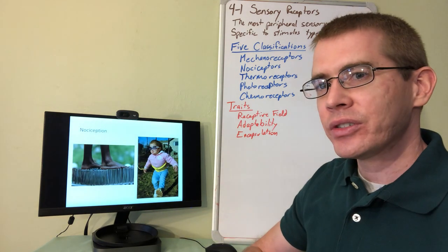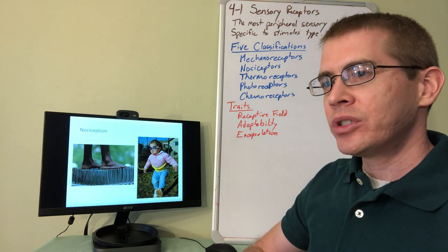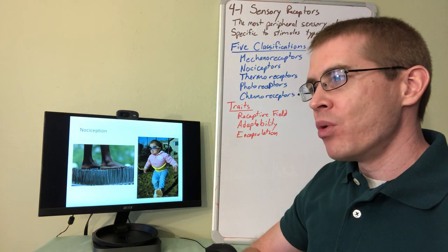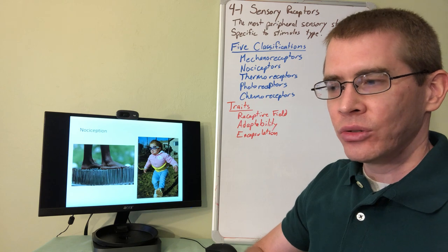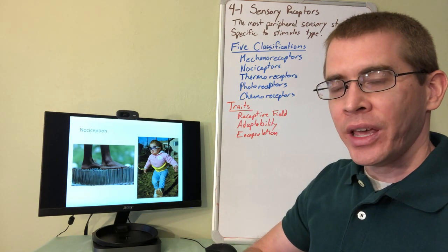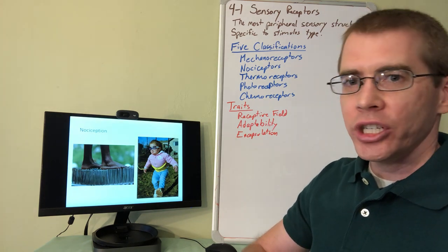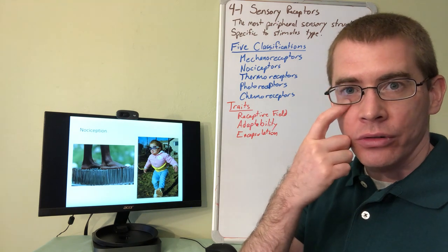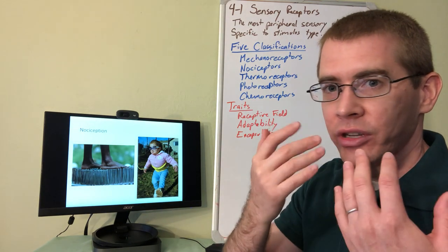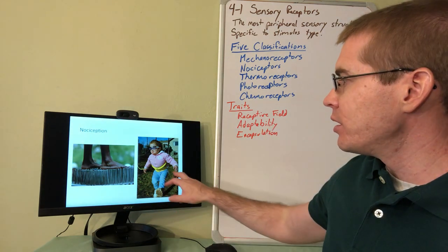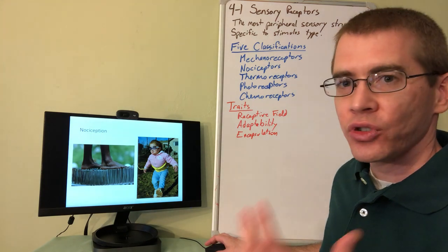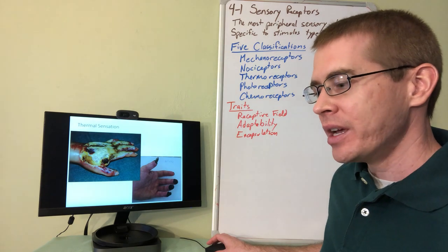Nociception is important because it allows us to sense pain. Without nociceptors, we don't remove ourselves from noxious stimuli. A girl named Gabby was born with a congenital insensitivity to pain due to a genetic defect in her nociceptors. She doesn't sense pain, which sounds good but is actually quite dangerous — she would dig at her face and eyes, requiring goggles over her eyes to prevent orbital damage. She kept chewing her fingers and scratching scabs open. Nociceptors are very important, even if they can be annoying in day-to-day life.